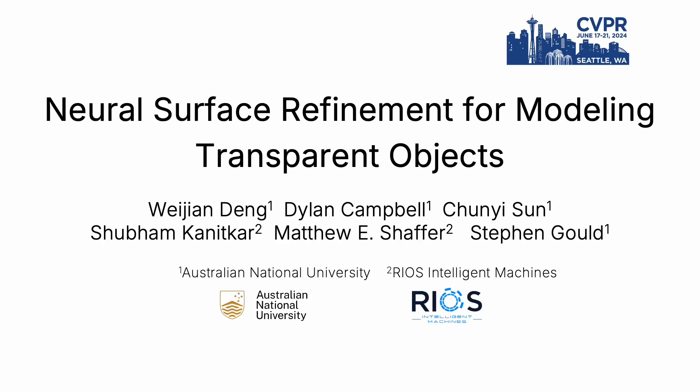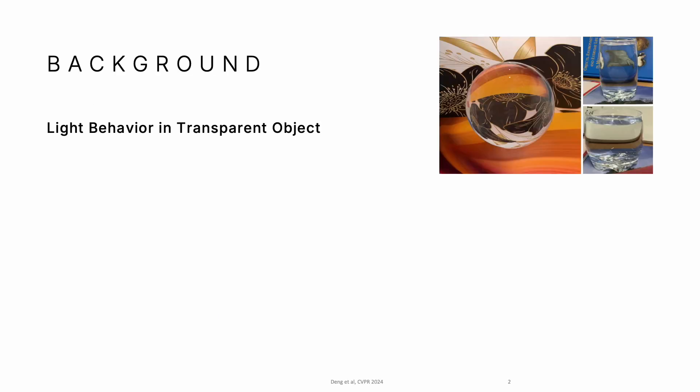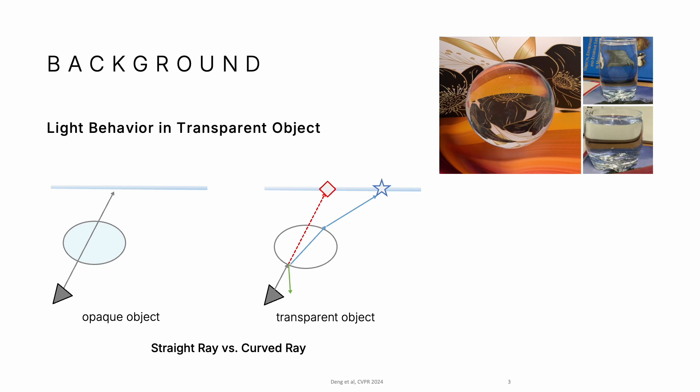This work introduces neural surface refinements for modeling transparent objects. Let's look at light behavior in transparent objects. We typically assume light rays transport along a straight path.